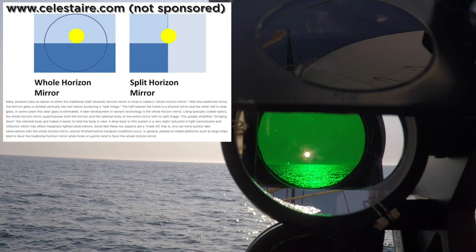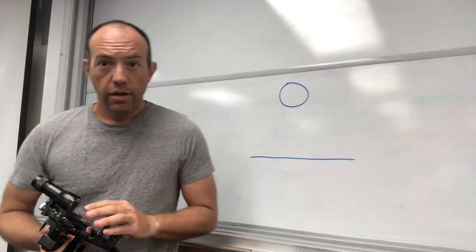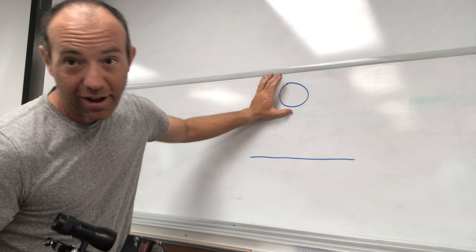The second type is the traditional split horizon mirror which has half of it silvered and half of it clear. For this demonstration on the whiteboard I've got a little planetary body, a Sun or a moon or something, and a horizon so we can see the difference between the two mirrors.